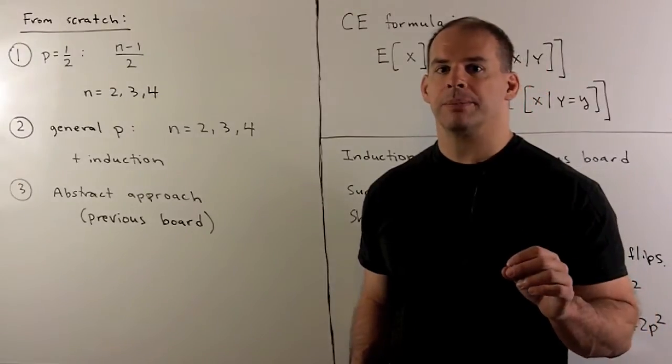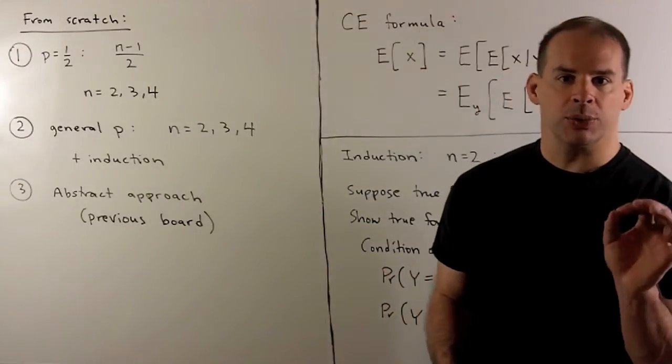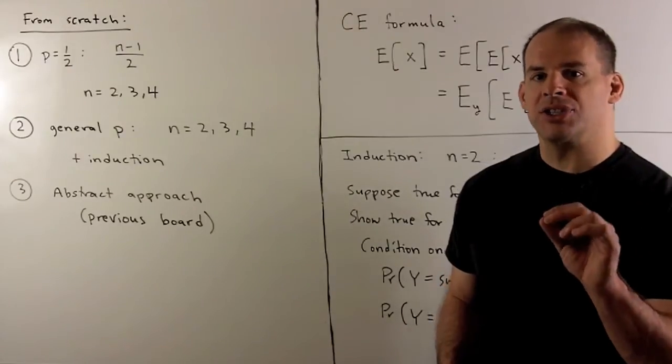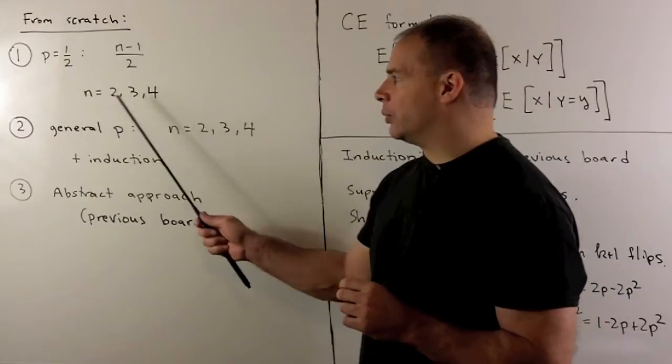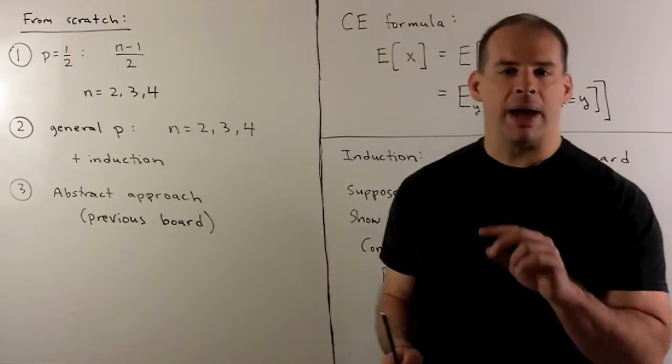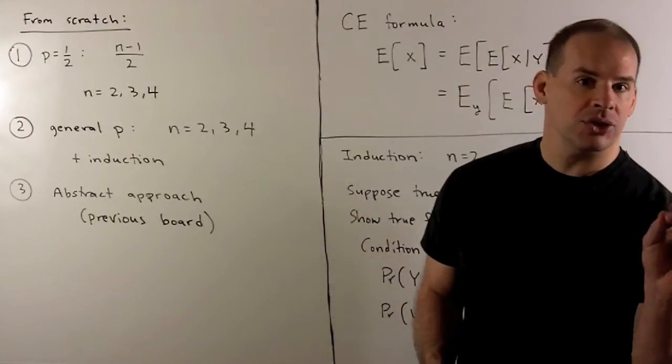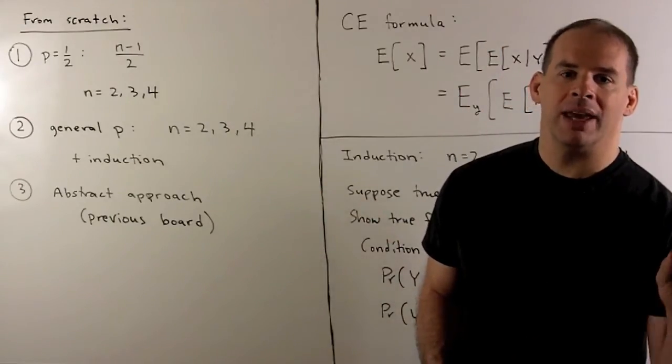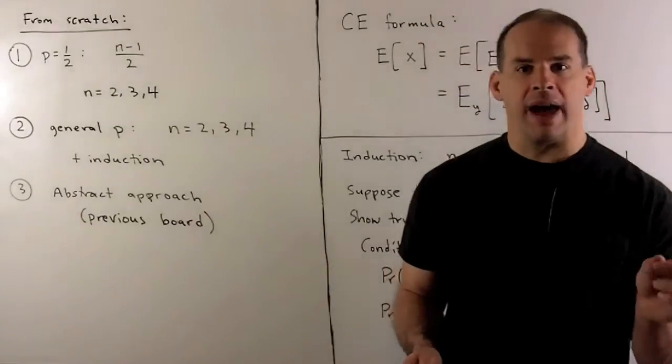How do we work the problem from scratch? First, we have a fair coin. So, P is equal to a half. That'll simplify our computations. If we check N equal to two, three, and four, a pattern emerges. We'll get the formula N minus one over two. This agrees with our general formula. And we note, this says if we have a fair coin, we're switching about half the time.